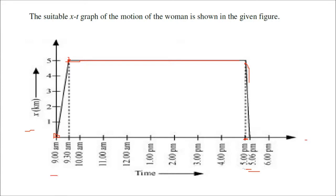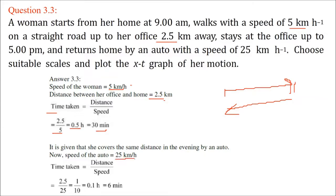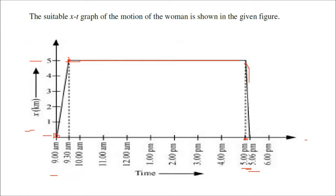We choose the x-axis from 9 to 5, with intermediate points at 9:30, 10, 10:30, etc. The x-axis in km goes up to 2.5 km. When she walks, speed is 5 km/h and distance is 2.5 km, so time = distance/speed = 0.5 hour = 30 minutes. She then covers the same 2.5 km at 25 km/h, giving t = 1/10 hour = 6 minutes. This completes the plotting of the graph.